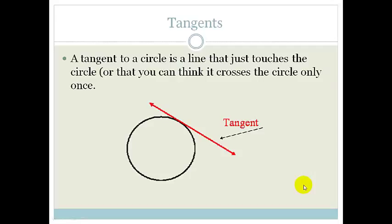Now, as you already know, a tangent to a circle is a line that just touches a circle. So you can think of it as that it only crosses the circle once. It just touches it.